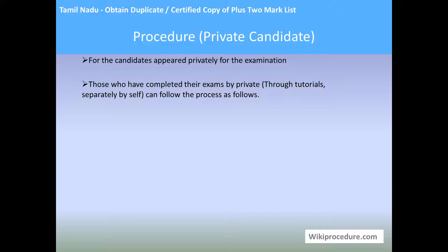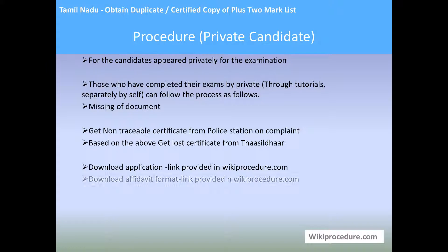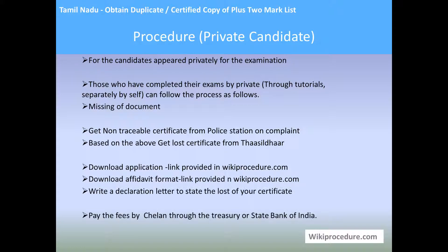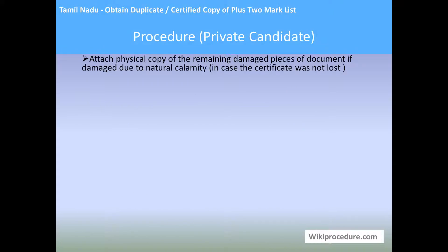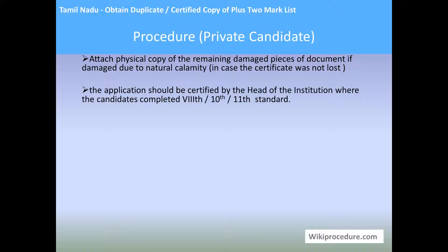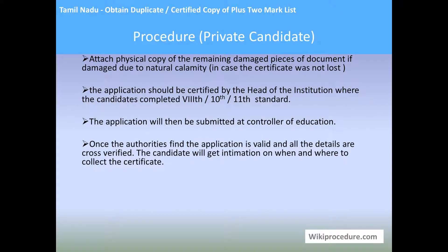Procedure for private candidates: those who appeared privately through tutorial or self-study can follow this procedure. Get a non-traceable certificate from the police station or from the tahasildar based on the situation; get the loss certificate from the tahasildar; download applications, fill up all affidavits, give a self-declaration, pay the fees and provide the chalan number; give a self-addressed envelope with 30 rupees value; attach physical copy of remaining damaged pieces if available — in that case no certificate from police or tahasildar is needed. The applicant must be certified by the head of the institution where the candidate completed eighth, tenth, or eleventh standard. The application will then be submitted to the controller of education, and upon validation the candidate will get intimation to collect the document.